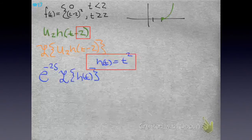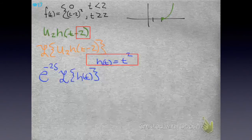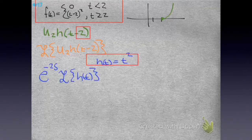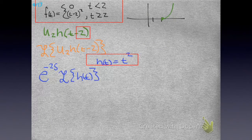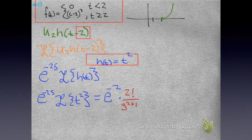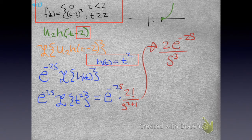Our function is that, because if I compose that, wouldn't I get this original guy up here? If I put a t minus 2 in there, then I have our original function. But what's the Laplace of t squared? That's 2 factorial over s to the 2 plus 1, from your list of Laplace transforms. So all you got to do is clean it up — 2 factorial is 2, that's e to the minus 2s over s to the 3rd.